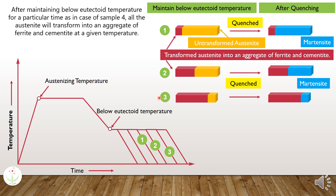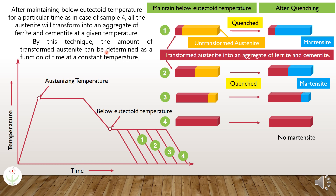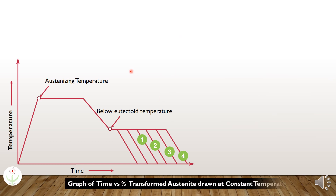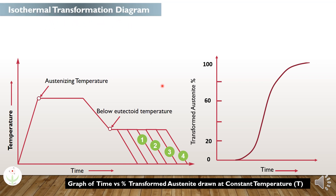After maintaining below the eutectoid temperature for a particular time — as in the case of sample 4 — all the austenite will transform into the aggregate of ferrite and cementite at a given temperature, and no martensite will be observed upon quenching of the sample, which indicates that the transformation has already been completed. By this technique, the amount of transformed austenite can be determined as a function of time at a constant temperature. The results are plotted as a graph of percentage transformed austenite versus time, and this is known as the isothermal transformation diagram, since the transformation is allowed to complete at a constant temperature.